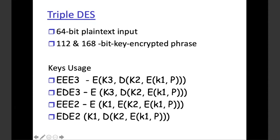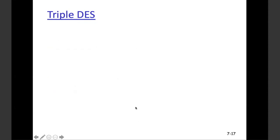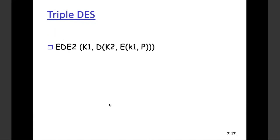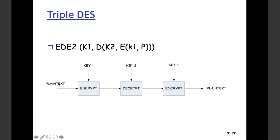For EEE2, there will be two keys — key one here, the second key, and then one key again. In the EDE variant: plain text is encrypted with key one, then decrypted using key two with the decryption algorithm, then encrypted again using key one, so multiple iterations happen and the text keeps changing.